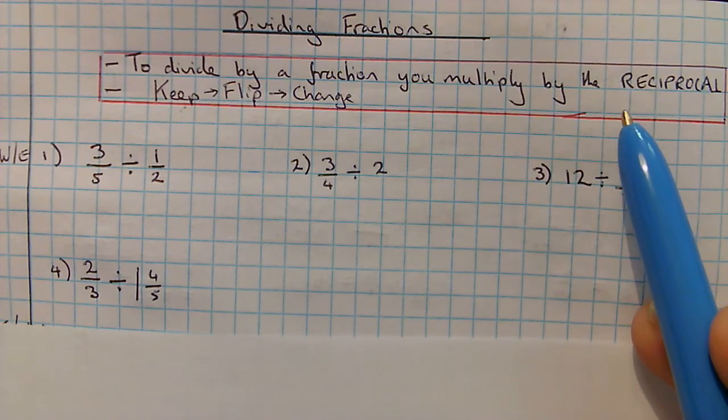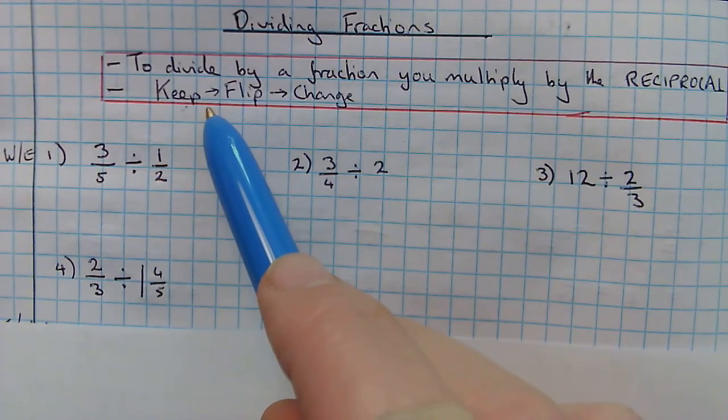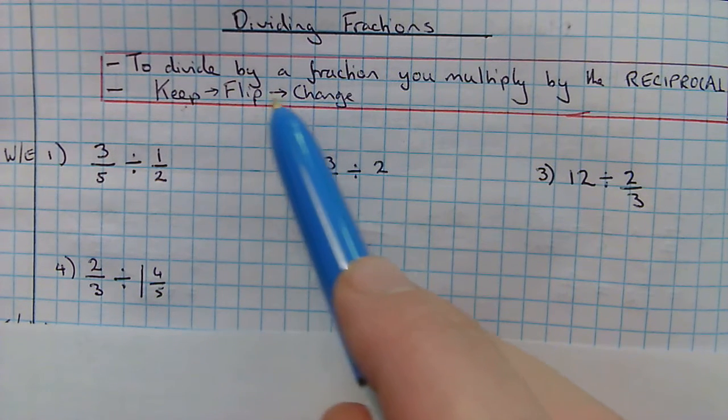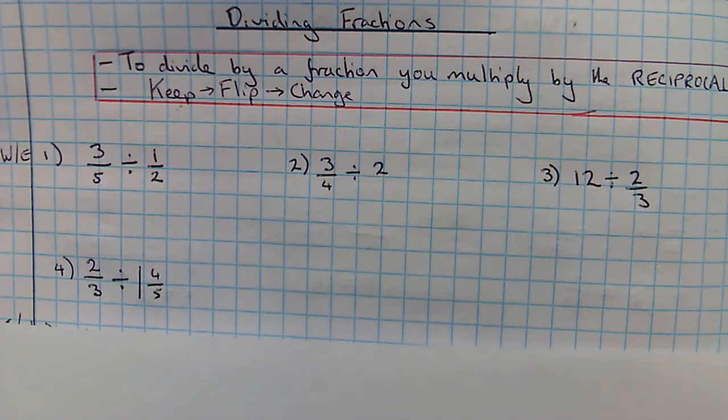So people often remember this as keep the first fraction, flip the second fraction to find the reciprocal, and change the divide to a times.